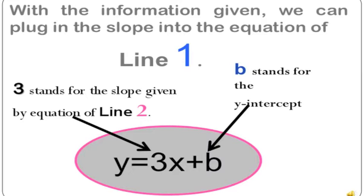With the information given, we can plug in the slope into the equation of Line 1. So far we have y equals 3x plus b — 3 stands for the slope given by the equation of Line 2. B is what we have yet to figure out, which is the y-intercept.